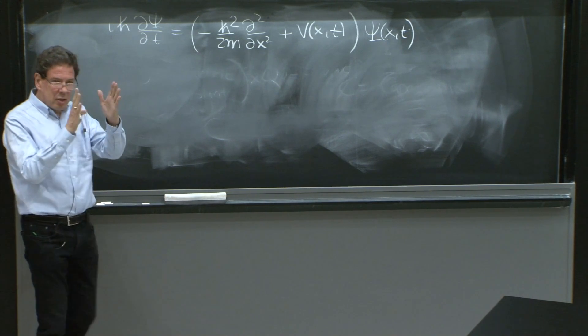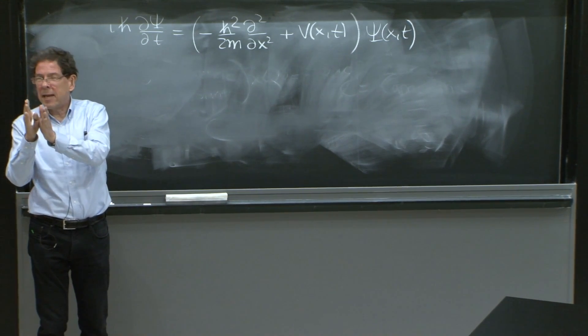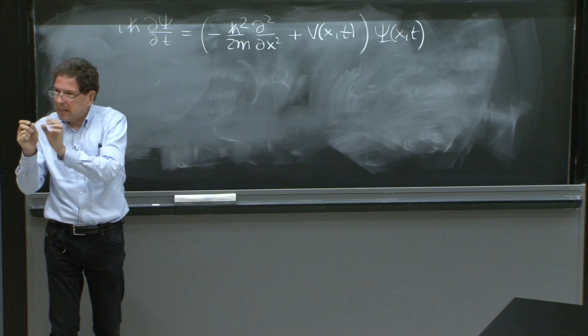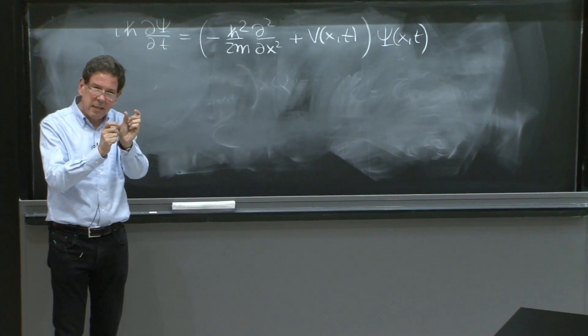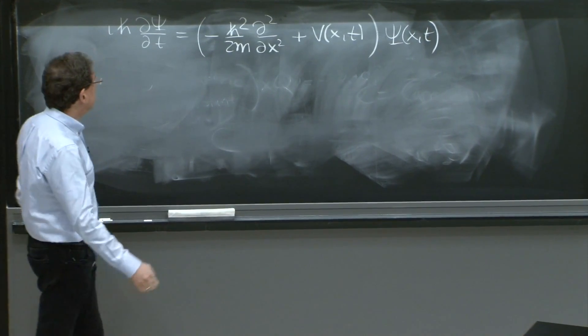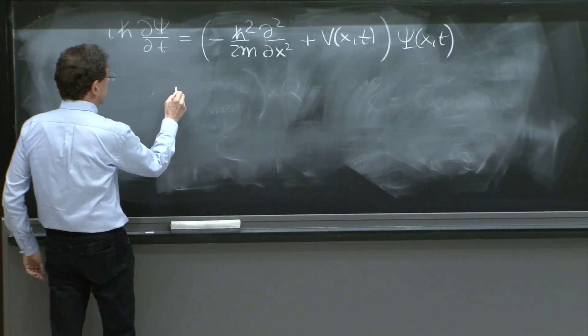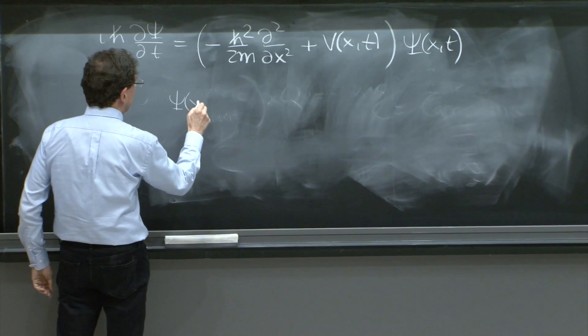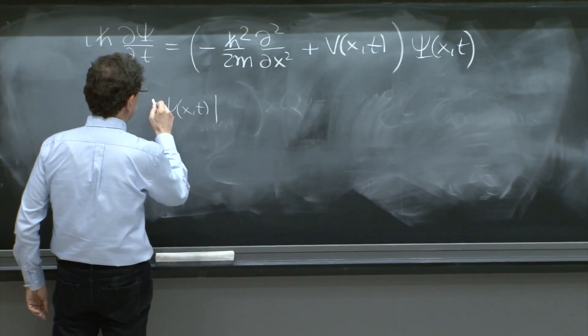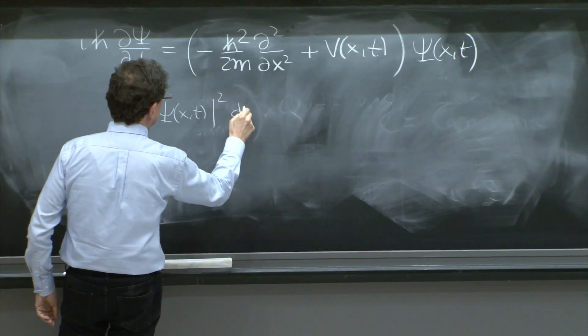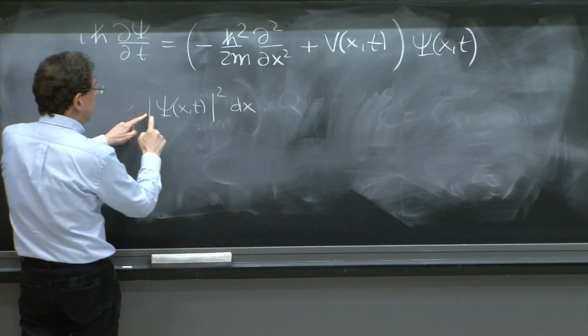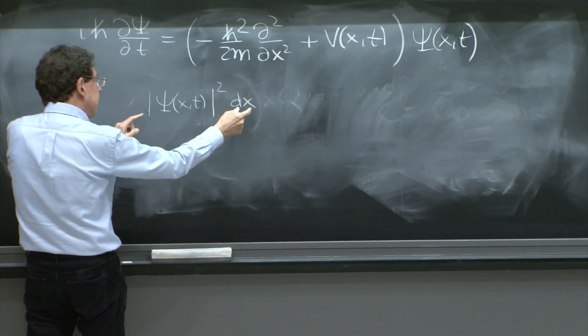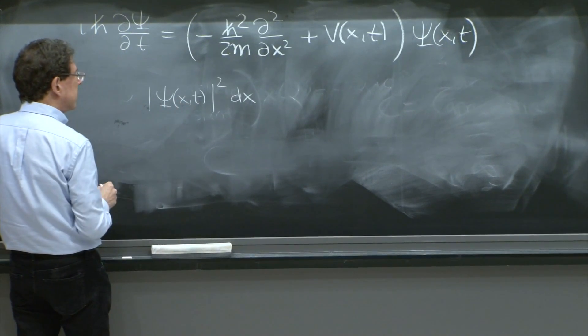Psi squared multiplied by a little dx would give you the probability to find the particle in that little dx at some particular time. So psi of x and t squared dx would be the probability to find the particle at that interval dx around x.